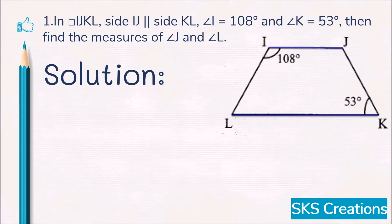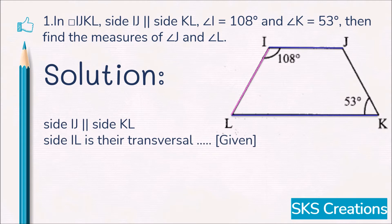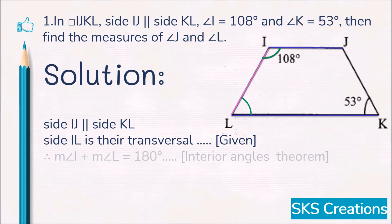Side IL is a transversal. So here we write: side IJ parallel to side KL, and side IL is the transversal. In this figure, angle I and angle L are interior angles formed by parallel lines IJ and LK with transversal IL. We know that interior angles formed by parallel lines are supplementary.